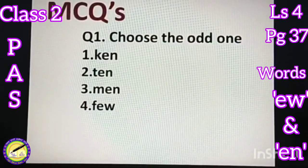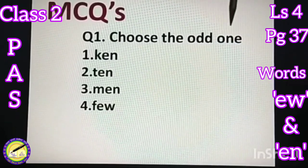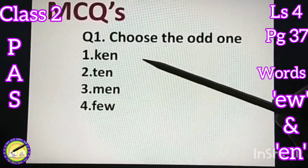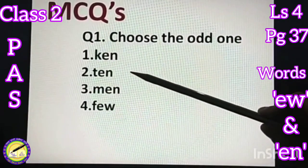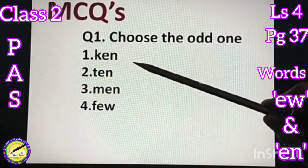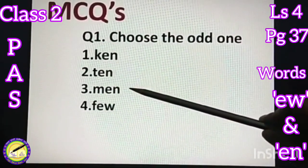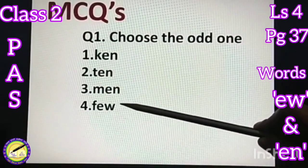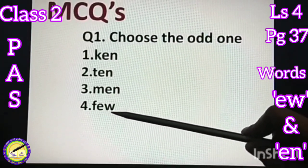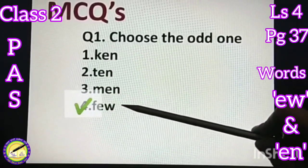Now start MCQs. Question number one: choose the odd one. Look at the words - can, ten, men, few. All these three, first, second and third having same ending sound and the last one is different, it's having a different ending sound. So this is the odd one out, click on it.